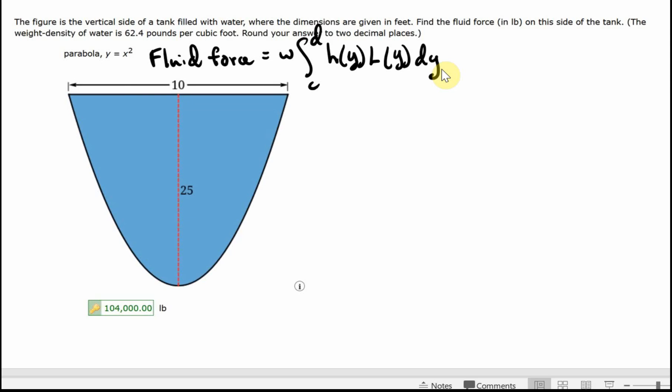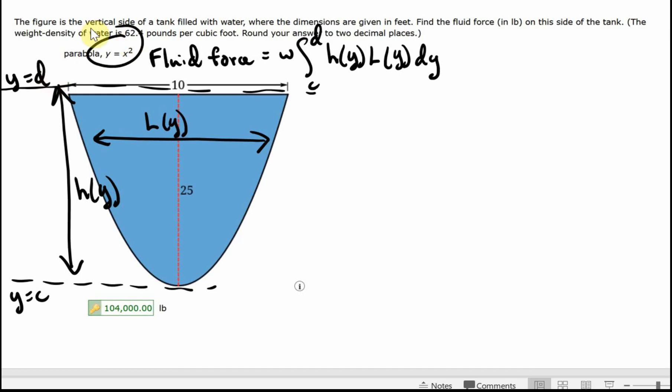And what that is, if we look at that, this length here that changes, this is our L of Y. And then when you go up and down, we get the so-called height H of Y. And then you want to calculate that as Y goes from C here to Y goes to D, and you use Y here as this parabola.